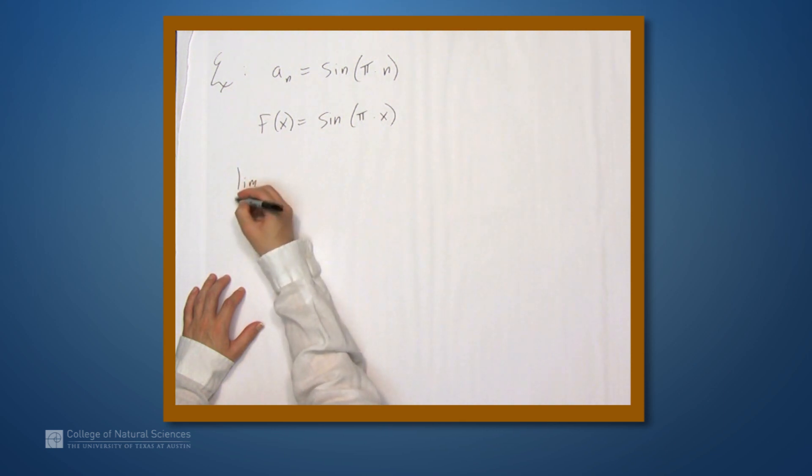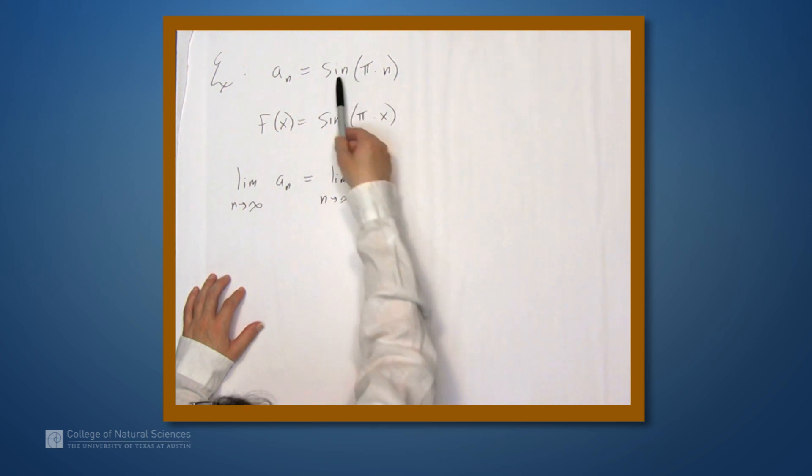But the limit as n goes to infinity of a sub n is the limit as n goes to infinity of zero, because every one of these terms is zero.